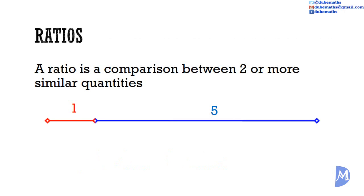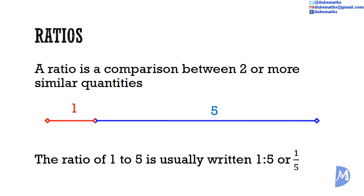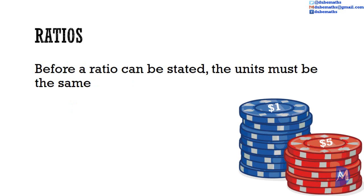The ratio of the red line to the blue line is 1 to 5. It is written 1 colon 5 or in fractional form as 1 over 5. The ratio of the value of the blue chips versus the red chips.